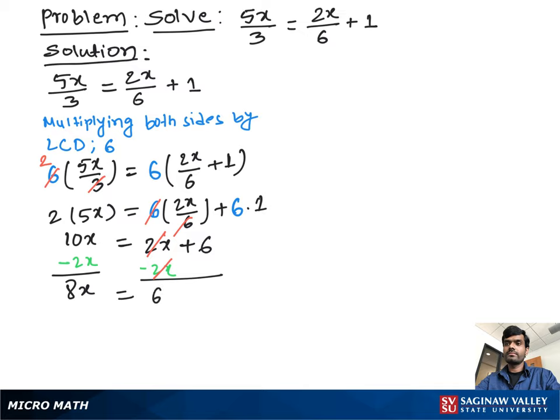Now we divide both sides by 8. So 8 cancel out. The factor of 6 is 2 times 3 and factor of 8 is 2 times 4. Now 2s cancel out, so we get x equal to 3 over 4.